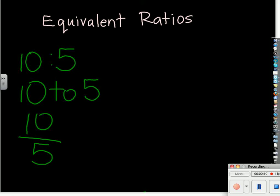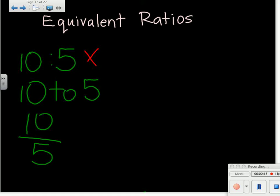For example, you can multiply 10 to 5 by 2, which equals 20 to 10.